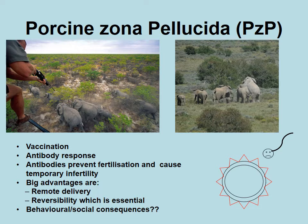A massive advantage of PZP is that it can be administered from a dart by a vet, allowing remote delivery without having to sedate the animal. Importantly, it is reversible, so you can reverse it after a certain amount of time depending on the objectives of your reserve. However, there still needs to be more research conducted on the behavioral and social responses of delivering this to elephants, as elephants are very bright animals with a very rigid and complex social structure. More research is needed on the behavioral and social effects as this is delivered to more and more female elephants around the country.